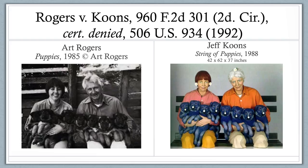Koons tore the copyright notice off the card and sent it to Italy to be copied. He visited the studio and directed the artisans to use the same angles, poses, and expression as in the photograph. He altered the work by making the couple appear vacant, with daisies adorning their hair, and painted the puppies in a garish blue color. The polychromed, larger-than-life-size sculpture was fabricated in a limited edition of four and sold three copies for a total of $367,000. Rogers brought a copyright infringement action in a New York federal district court against Koons and the Sonnaben Gallery and won in 1991.